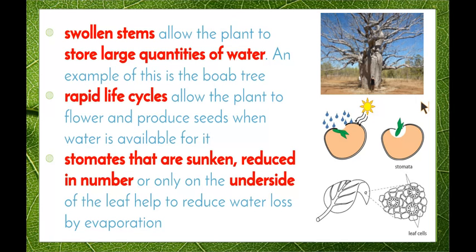Stomata that are sunken, reduced in number, or located only on the underside of the leaf help reduce water loss by evaporation. Eucalyptus trees are one example where the majority of stomata are on the underside of the leaf, and the way the leaves hang also helps to stop water loss by evaporation.